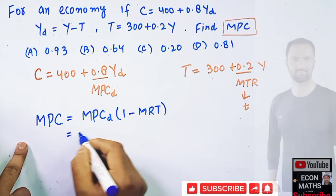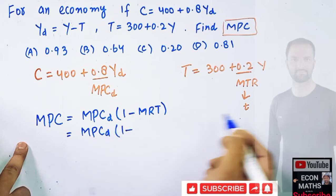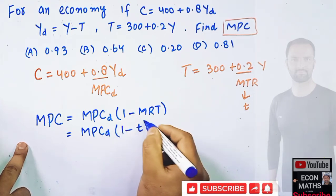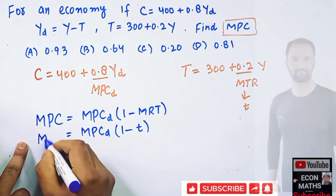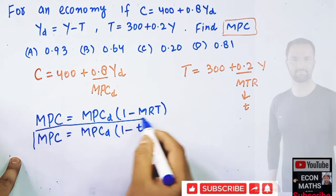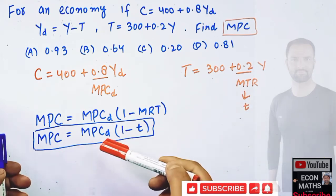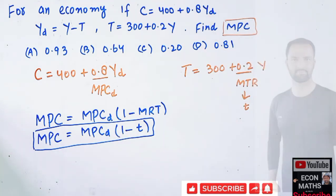Or we can write it as MPCd times (1 minus t). This is the relationship you should know - the relationship between MPC and MPC of disposable income.